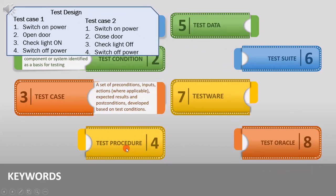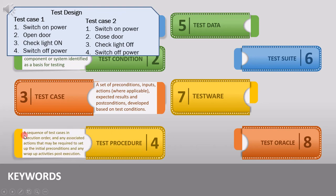The next keyword is test procedure, and it is defined as a sequence of test cases in execution order and any associated actions that may be required to set up the initial preconditions and any wrap-up activities post-execution.